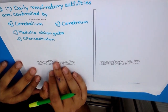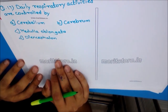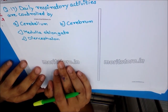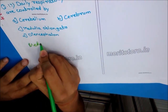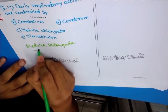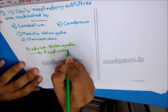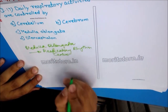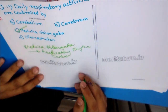Question 17: Daily respiratory activities are controlled by? Options: A) Cerebellum, B) Cerebrum, C) Medulla oblongata, D) Diencephalon. The medulla oblongata of the brain has a specific region known as the respiratory rhythm center, which is responsible for controlling activities related to respiration. The answer is option C — medulla oblongata.